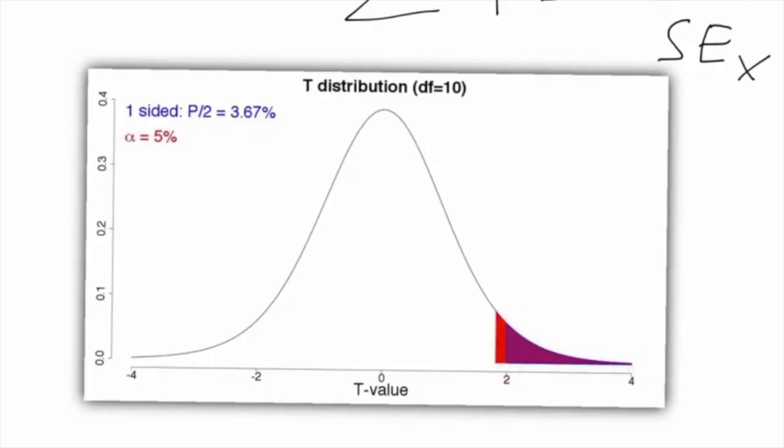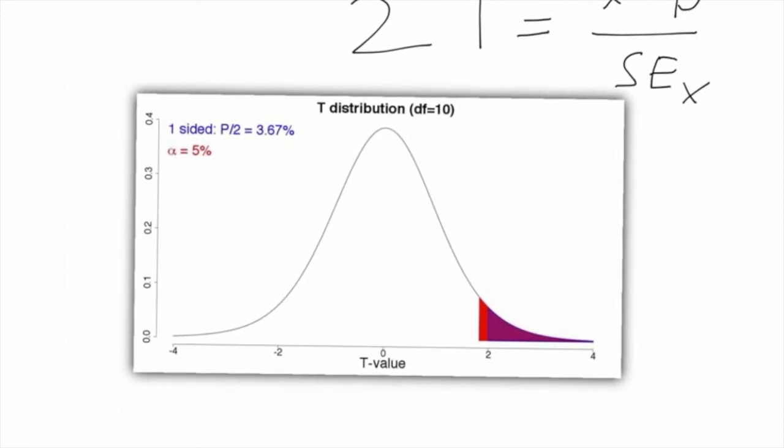In this case, we can conclude that our found p-value is smaller than the chosen alpha, and that the found t-value is more extreme than the critical t-value that belongs to a one-sided alpha of 5%. And so in this case, we would reject the null hypothesis.